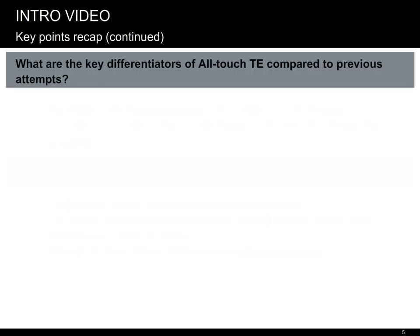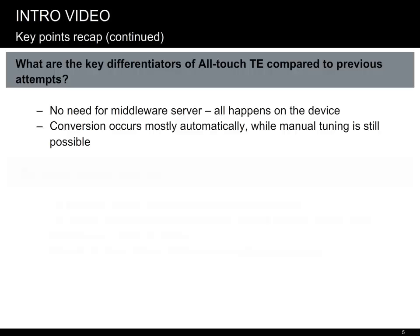And why didn't it happen before? There were previous attempts that did not get traction. Why do we think this one will succeed? What we think? This time, conversion happens on the device, mostly in an automated fashion. There's no need for a middleware server installation or manual UI creation. Of course, some exceptions may occur, and we provide fine-tuning tools to handle those.